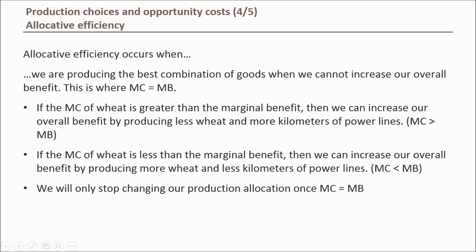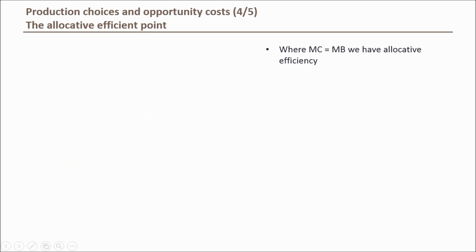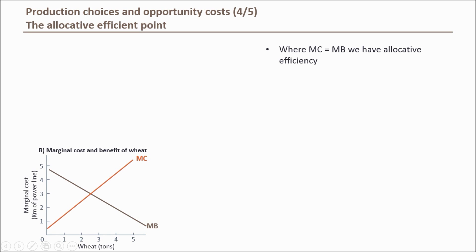Let's look at our marginal benefit and cost graphs to see how these behaviours work in action. Because both our marginal cost and marginal benefit curves use the same metric on the y-axis, we can combine them into a single marginal cost and benefit graph for wheat — you can see this in Figure B. An important rule is that in economics, nominal prices are seldom used. To remove confusion from changing prices or inflation, we always use relative prices or relative goods. In our case we use kilometres of power lines as a relative good to measure marginal cost and marginal benefit of wheat.